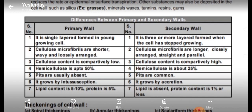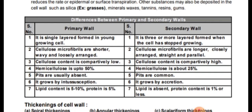Now the differences between primary and secondary wall: the primary wall is a single layer formed in young, growing cells. The secondary wall is three or more layered and forms when cells have stopped growing in mature cells. Cellulose microfibers in the primary wall are shorter, wavy, and loosely arranged, whereas in secondary wall they are longer, closely arranged, straight, and parallel.